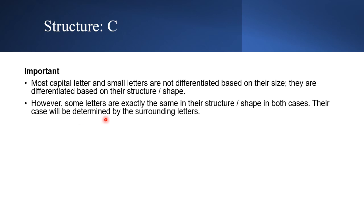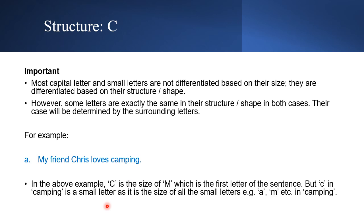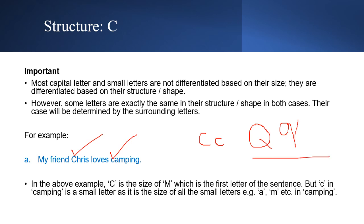Their case will be determined by the surrounding letters. For example: 'My friend Chris loves camping.' In this sentence we have 'Chris' and 'camping.' Both are written in the same way. Now if you look at this letter C and this letter — the shape of the capital C is quite different from the small C, in the same way a capital A is different from a small A.